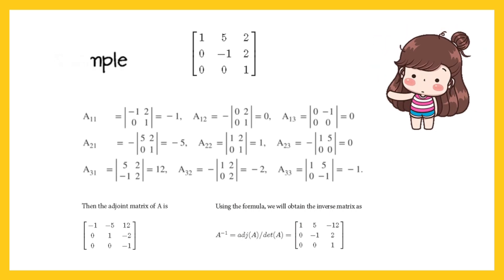Property 2: A square matrix A is invertible if and only if A is a non-singular matrix.